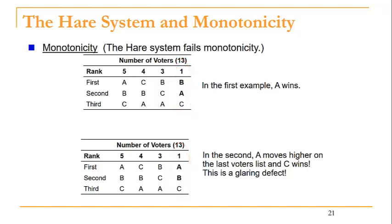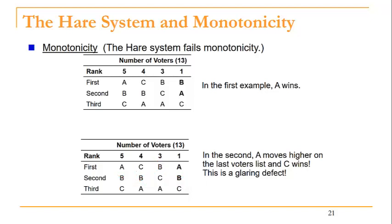When we focus on only those first place votes in the new election, this is actually the second example we did. Candidate B is eliminated initially with the fewest first place votes, and then when you put A versus C alone, C came out to be our winner. This is a glaring defect: A won initially, this one voter moved A higher on their preference list, but in doing so our end result was a different winner, C. This is a defect of the HAIR system.